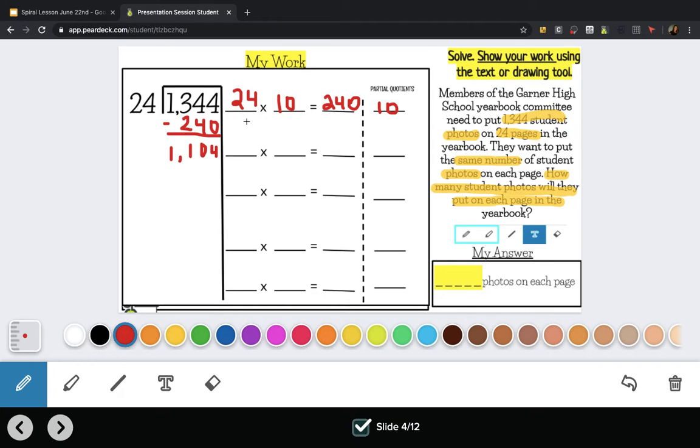So I have a lot more photos, so I definitely have to put more photos on each page. For 24 pages I'm going to put 20 photos on each page this time and I know that's just double what this is, so that would be 480 photos.